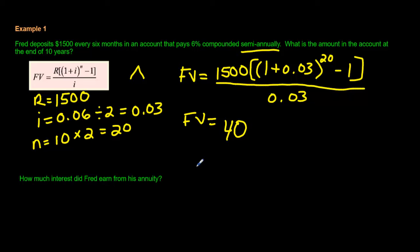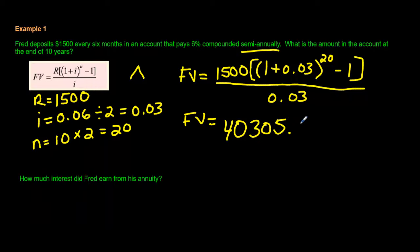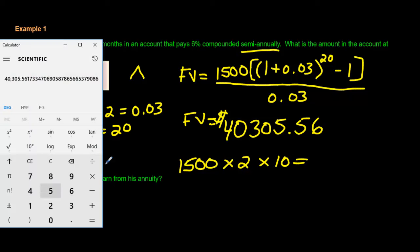Remember, this is money we're talking about here. So I believe it was, I do not have a photographic memory. $40,305.56. I'm going to put a dollar sign there. That is the future value. That's how much money Fred makes after depositing that money for 10 years. How much money would Fred have made if he just put that money under his bed? How much would he have made if he had just put the money under his bed with no interest whatsoever? Let's say he had $1,500. Sorry, he didn't do it every month. He did it twice a year for 10 years. How much money would Fred have altogether?